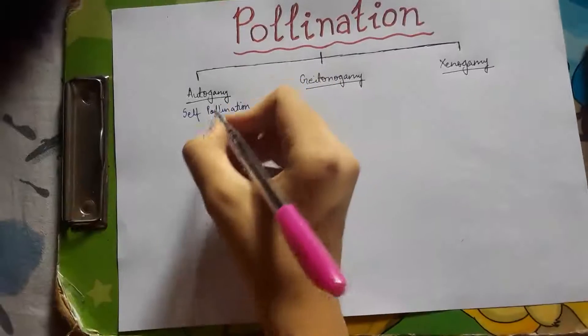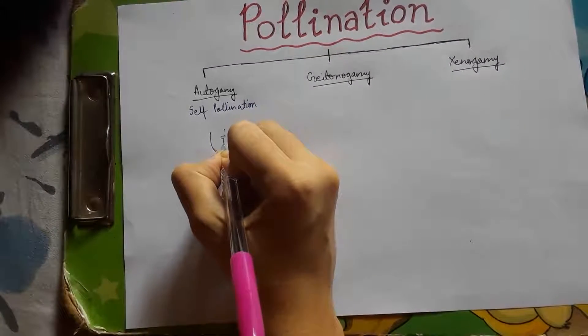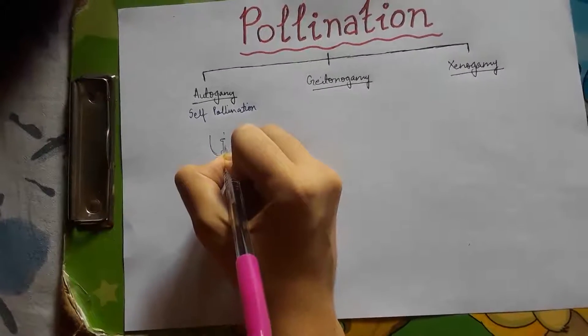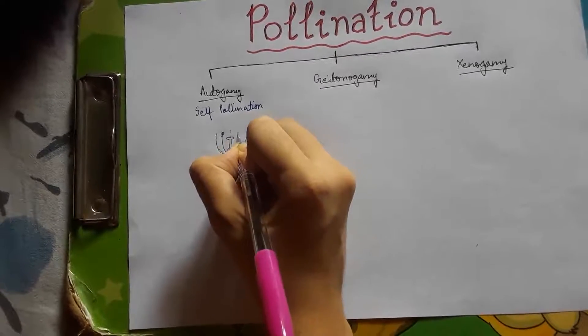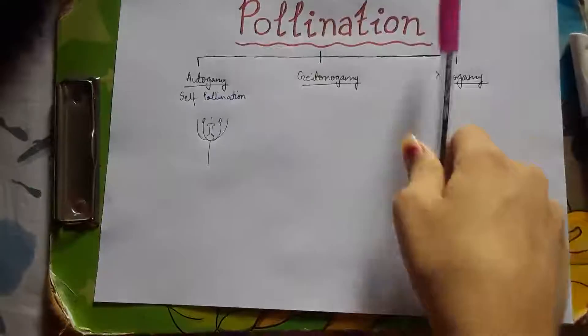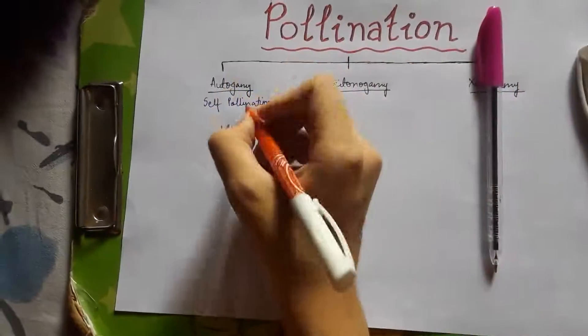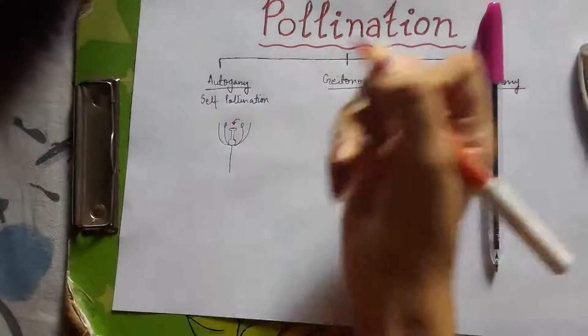So this is the flower, the stigma, and the stamens. So autogamy is self-pollination.